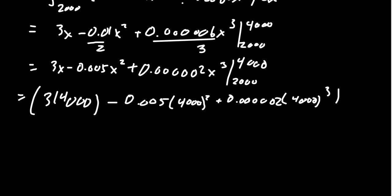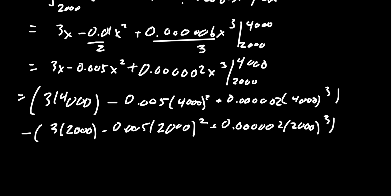And then we get 0.00002 times 4,000 cubed. That's the first bit to subtract from it. 3 times 2,000 minus 0.005 times 2,000 squared plus 0.00002 times 2,000 cubed. And I did position things so that I actually have some like terms combined together.